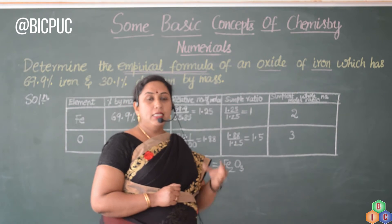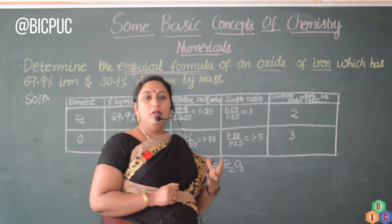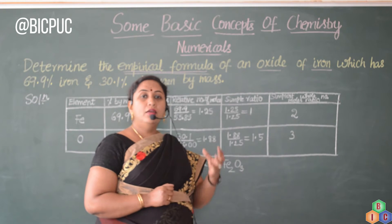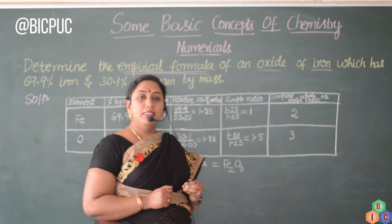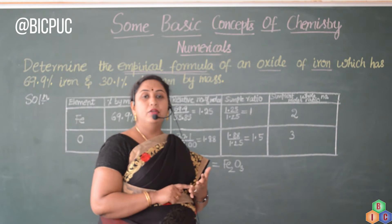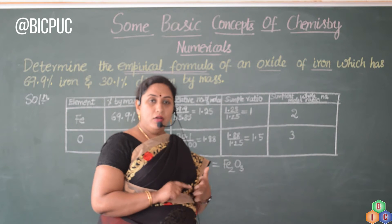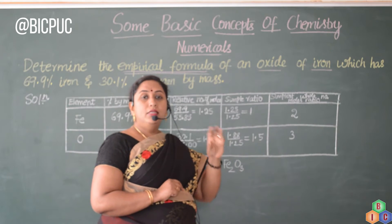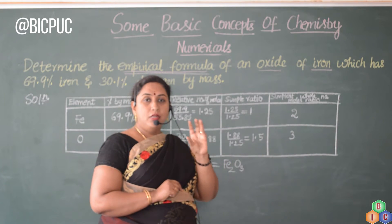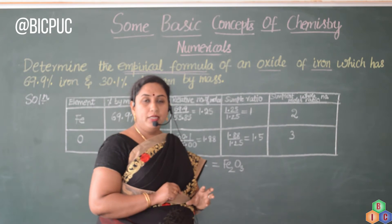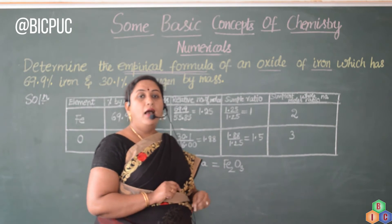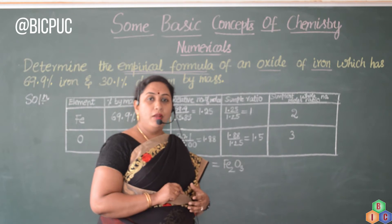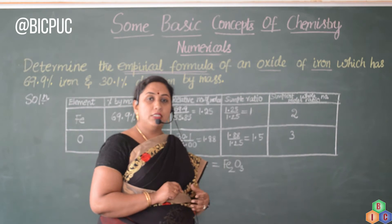The empirical formula is a simple formula which gives us the ratio of the exact components present in a given compound. For example, consider glucose. The components present in glucose are carbon, hydrogen, and oxygen — and this is the composition present in it.